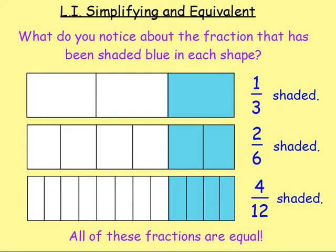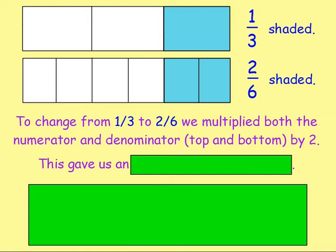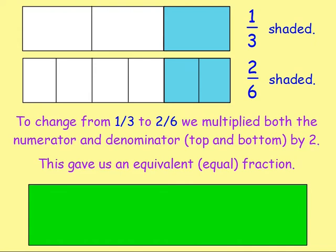Let's take the one third and the two sixths. Because they are the exact same, you can change between them. To change from the one third to two sixths, you multiply both the numerator and the denominator. The numerator starts with n, like north - that's the number at the top. Denominator starts with d for down - that's the number at the bottom. So the numerator and denominator, the top and the bottom, have both been multiplied by two.